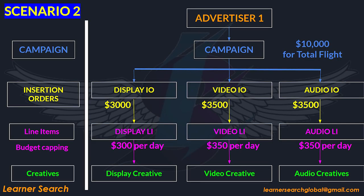If one line item under a respective IO doesn't spend, it has no effect on other line items under the same campaign. For example, in our case, if the display IO is unable to spend, just the display IO is impacted and the remaining two media types — video and audio IOs and their line items — are unaffected.